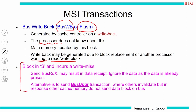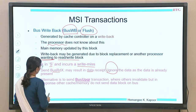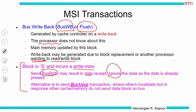A variant: if the block is in state S and we get a write miss, the processor wants to write and already has the block. Why send a bus read X and receive data we already have? We could instead send a bus upgrade transaction, meaning this cache wants to move from S to M. If we are in I going to M, we must send bus read X because we need the data. But if already in S, we only want to invalidate others — so bus upgrade suffices.